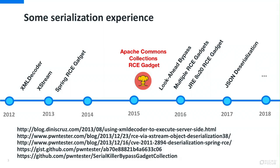In 2015, Christopher Hope and Gabriel Lawrence published the Apache Commons Collections gadget, and everything changed. All the researchers started looking into Java deserialization and started publishing vulnerabilities in WebLogic, WebSphere, and many other applications. So I retook my interest in Java deserialization.